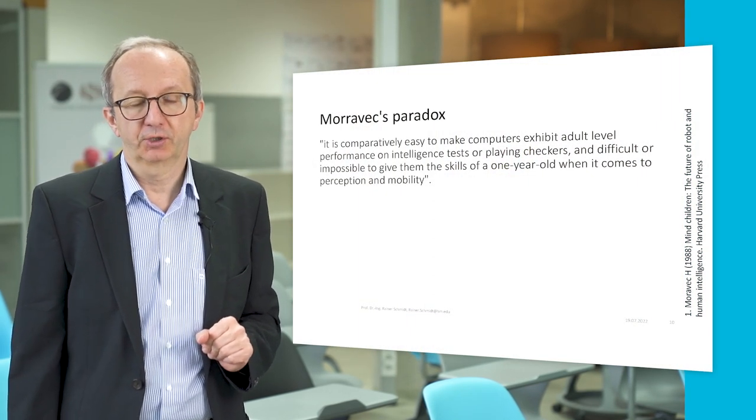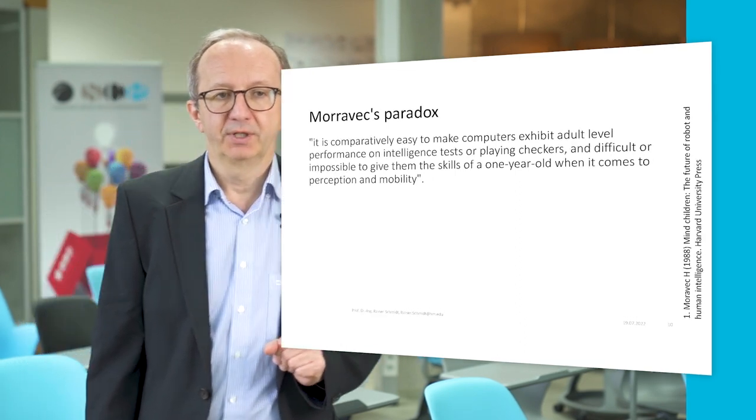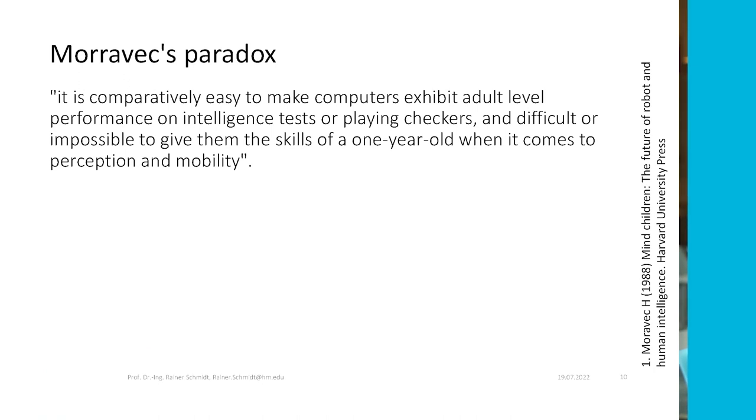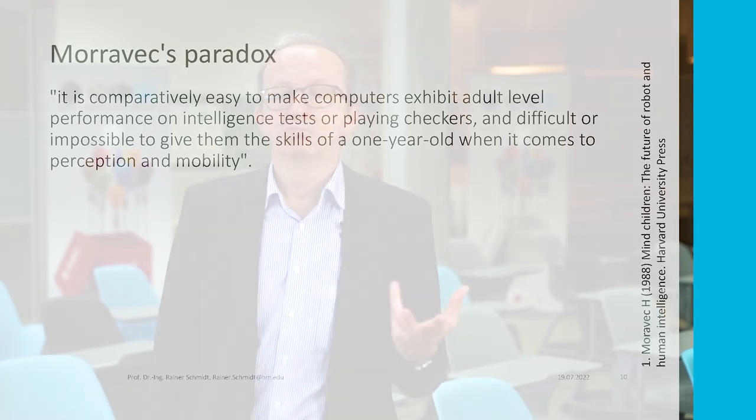Moravec's paradox joins Polanyi's. He says it is comparatively easy to make computers exhibit adult-level performance on intelligence tests or playing checkers, but difficult or impossible to give them the skills of a one-year-old when it comes to perception and mobility. The observation was that symbolic AI systems of the 1960s and 1970s could solve mathematical equations and quizzes, but it was difficult for them to differentiate between two different people.